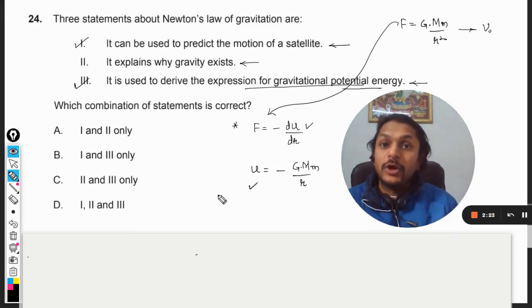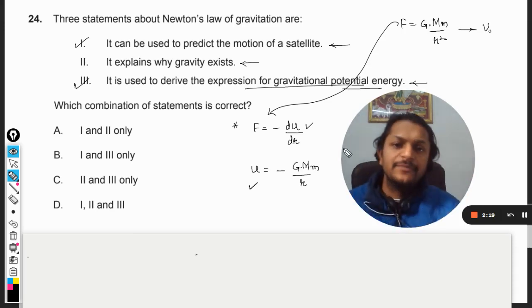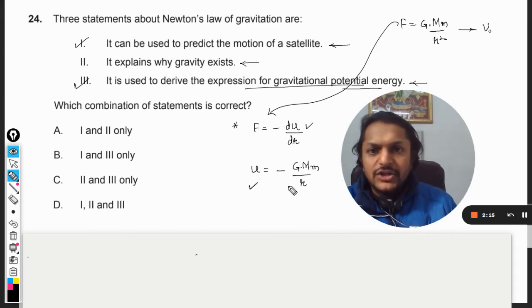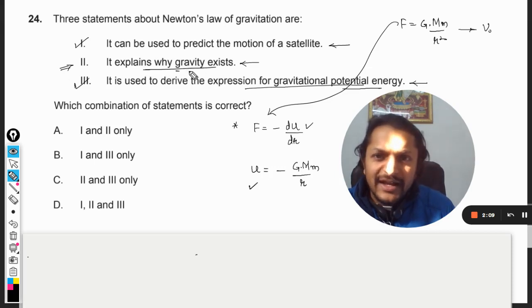So this is the general expression for gravitational potential energy at whatever distance the two bodies may be, like you might be talking about Jupiter and Earth. It is minus GMm by r and it is always negative. So definitely one and three are correct.